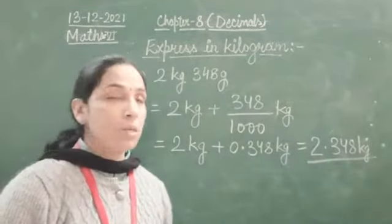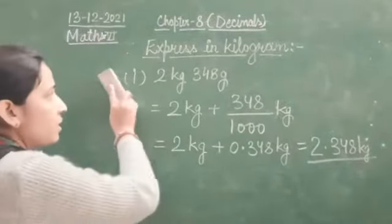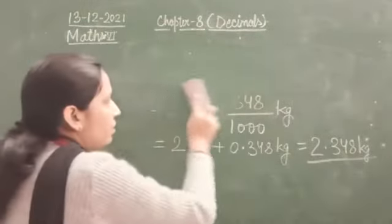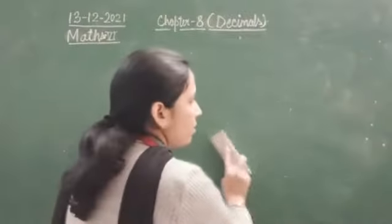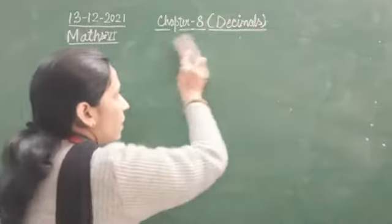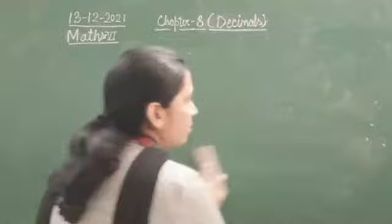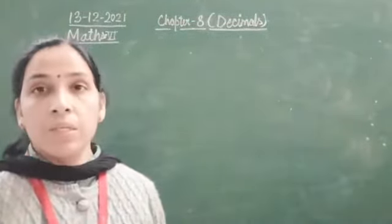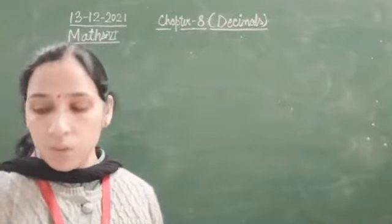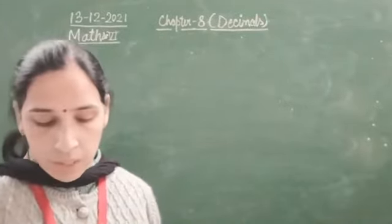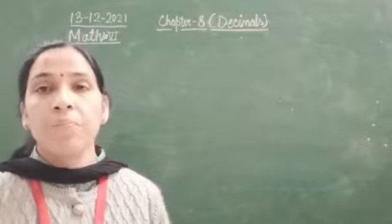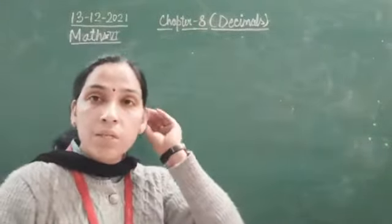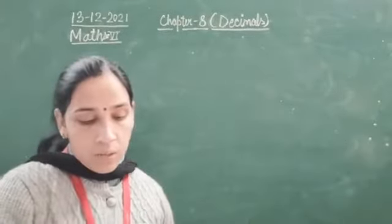After this expression — express in kilogram or such kind of a conversion question — we will be having operations on decimals. For addition, one simple rule of decimals is: put the decimal just below the decimal and then you can do the addition.